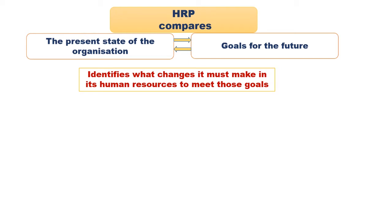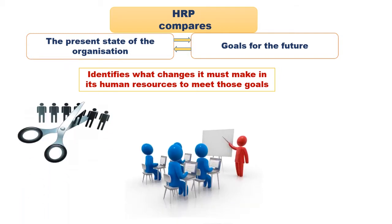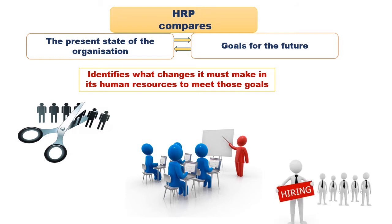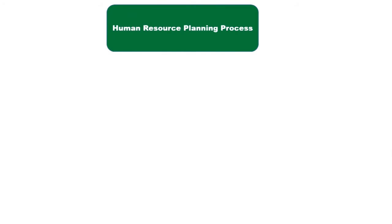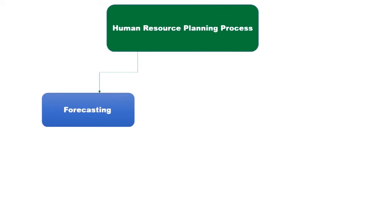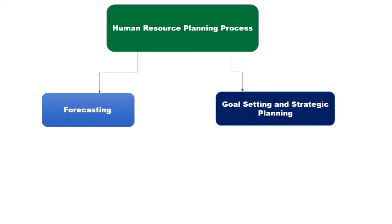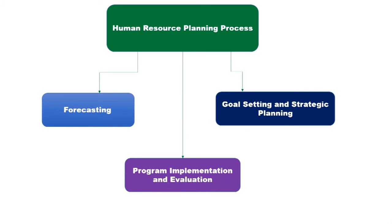The changes may include downsizing, training existing employees in new skills, or hiring new employees. Now the process of HRP consists of three stages: forecasting, goal setting and strategic planning, and programme implementation and evaluation.